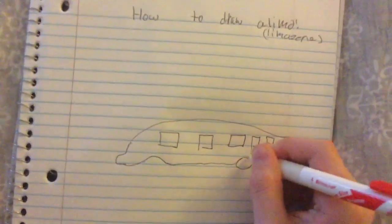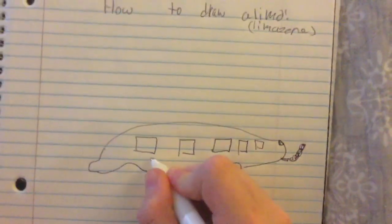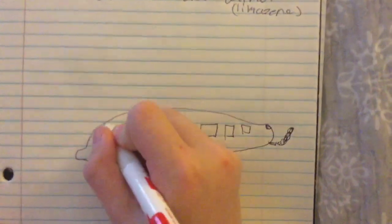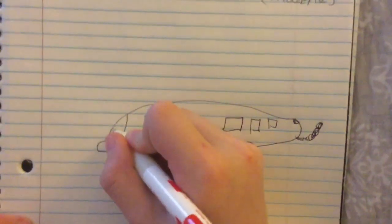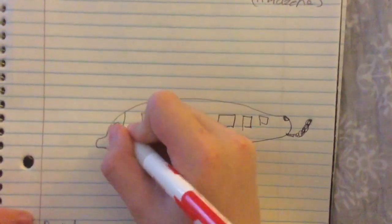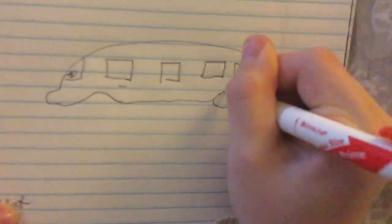Alright, let's draw those wheels so this thing can actually drive. Here's the front. We'll draw the driver's wheel right there. And finish drawing the wheels.